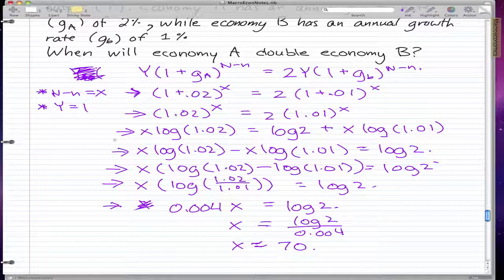So it takes approximately 70 years for economy A to double economy B. And we'll go through one more example in the next video.